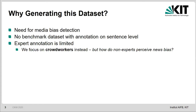Furthermore, datasets out there often consist of annotations labeled by experts; however, experts are quite rare and expensive. That's why we wondered: can we use crowd workers instead? And if so, how diverse are the annotations of crowd workers with respect to bias?